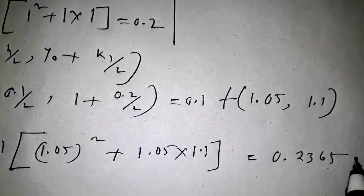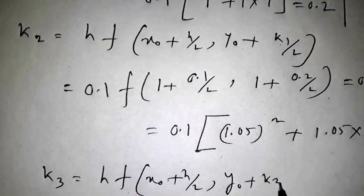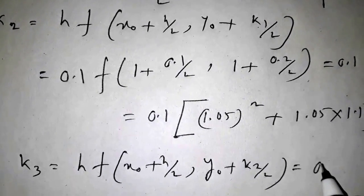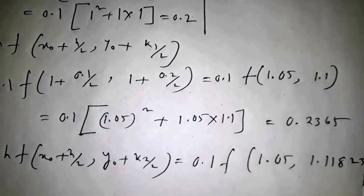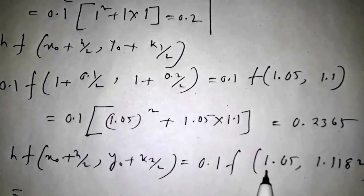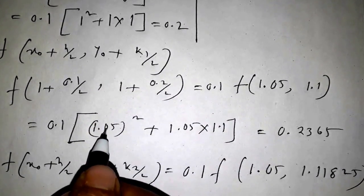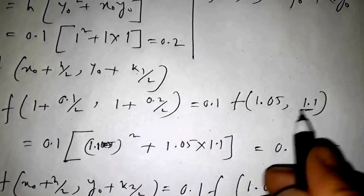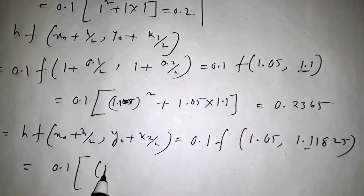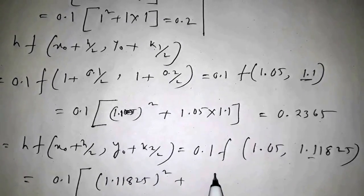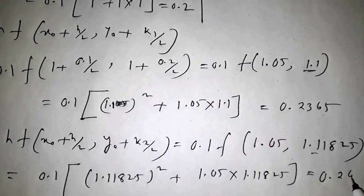Now we find k3 = h·f(x₀ + h/2, y₀ + k2/2). Similarly, x₀ + h/2 = 1.05 and y₀ + k2/2 = 1 + 0.2365/2 = 1.11825. So k3 = 0.1·f(1.05, 1.11825) = 0.1·(1.11825² + 1.05×1.11825), which gives k3 = 0.2425.